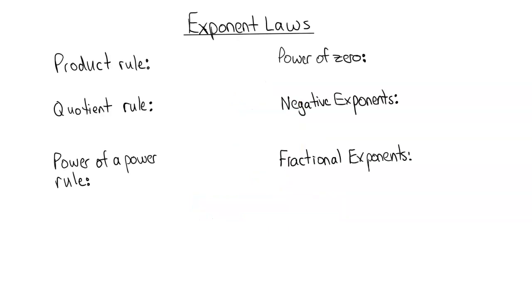Before we go over those four examples, I want to quickly review what the exponent laws are. The first one is the product rule. It says that something to some power multiplied by the same base to another power is equal to the sum of those two powers. So if I have X to the third and X to the seventh, we add the exponents together and we get X to the power of 10.